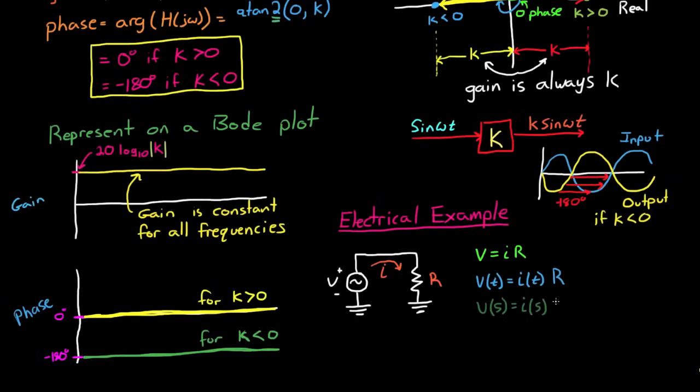We could take the Laplace transform of this equation and then solve for the output I over the input V and get 1 over R, which is the transfer function for this simple circuit. And since the resistance isn't changing with time, 1 over R is just a constant, and we could represent this on a Bode plot as a constant gain at 1 over R with a phase shift of 0 degrees. I know it's 0 degrees because R is going to always be positive. So this is what the Bode plot would look like for a very simple constant transfer function.